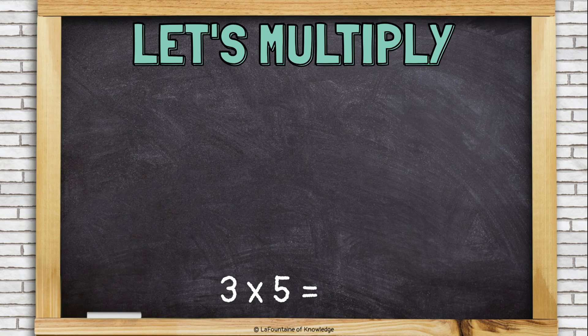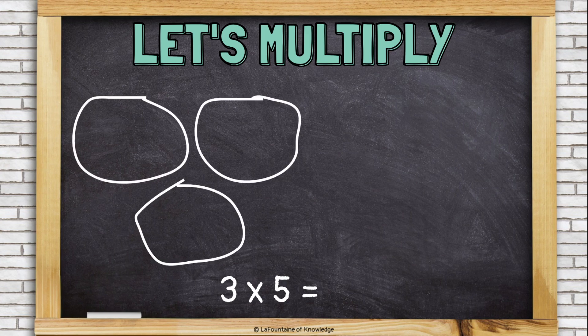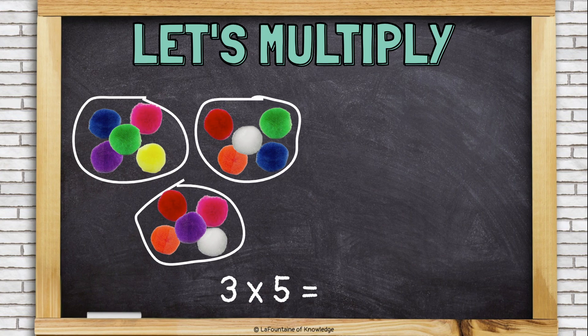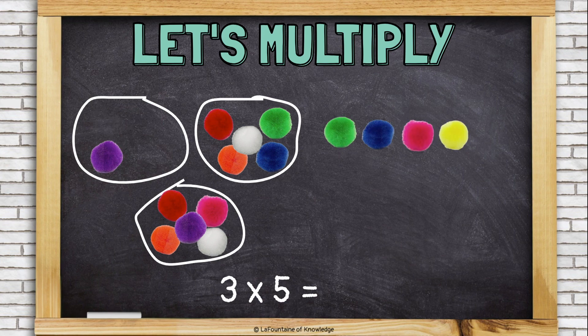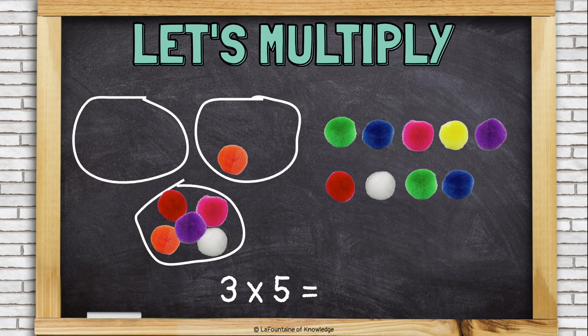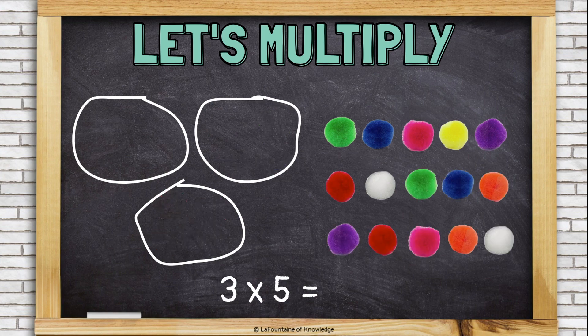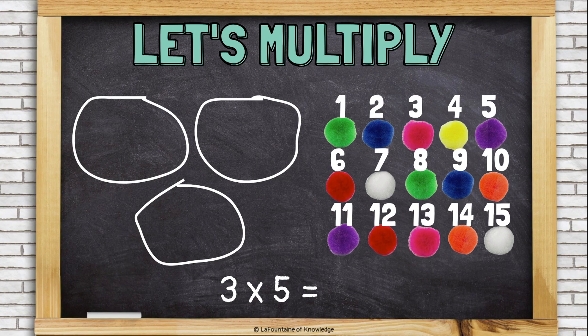Let's try multiplying using pom-poms. I have 3 groups with 5 pom-poms in each group. To figure out the answer to this multiplication problem, I need to take the pom-poms out of their groups and put them together to find the total number of pom-poms. Now I can see that I have 15 total pom-poms, which is the answer to my multiplication problem. 3 times 5 is 15.